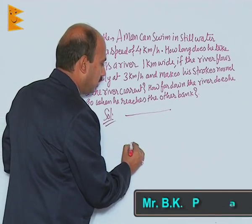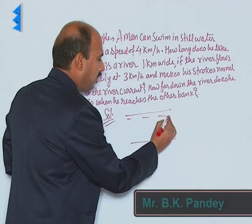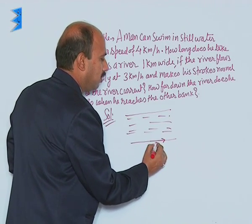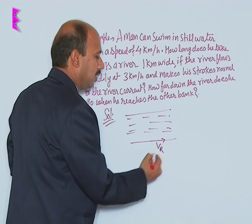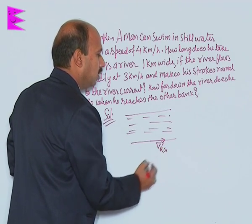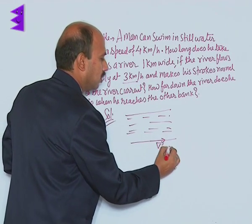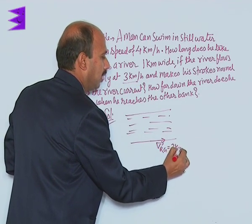Suppose you have taken these two banks of the river. The river is flowing in this direction. Velocity of river to this side, we can take it with respect to ground here, that is equal to 3 kilometer per hour.